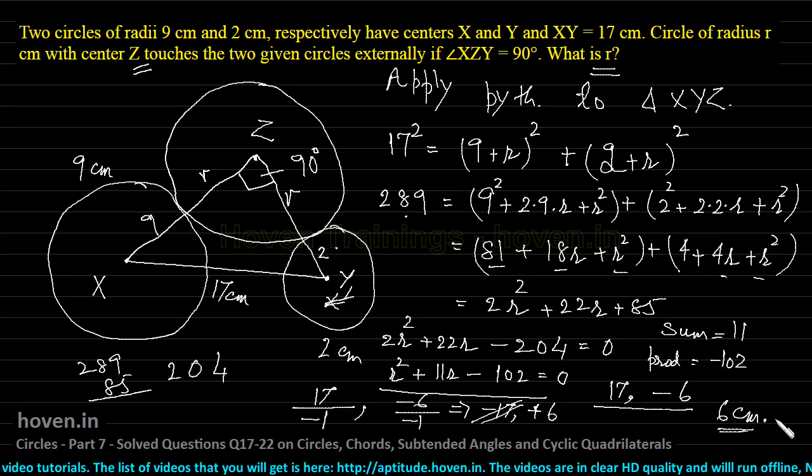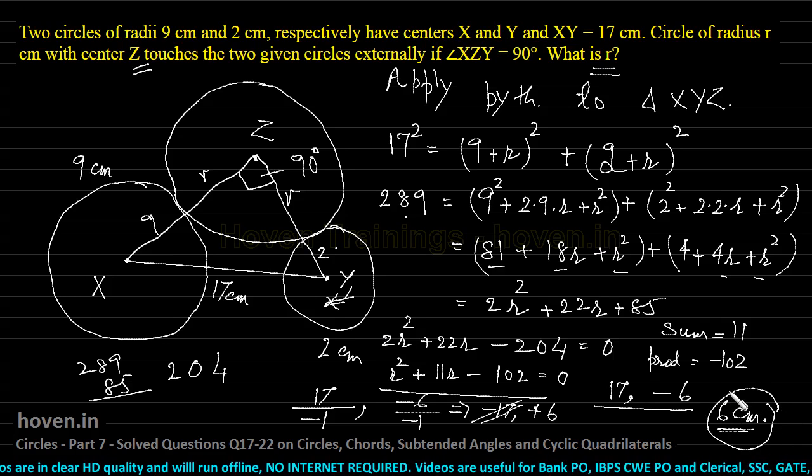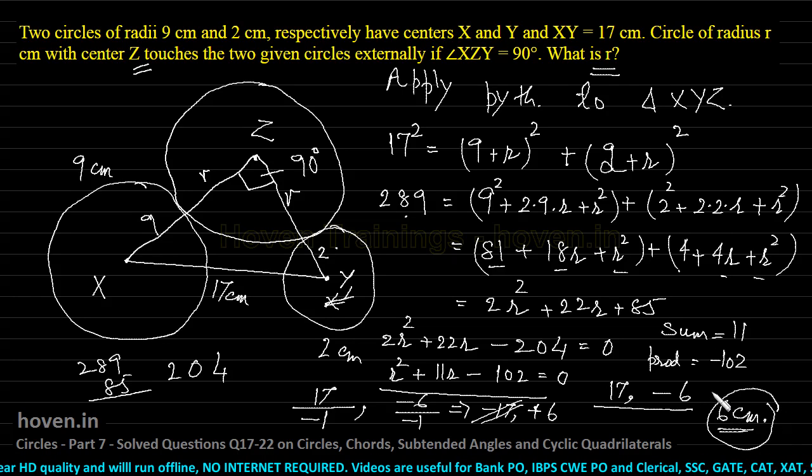This question required understanding of a right angle triangle, the Pythagorean theorem, and quadratic equations. All those concepts have been used in this question. The answer ultimately is 6 cm. Let us now move on to our next question.